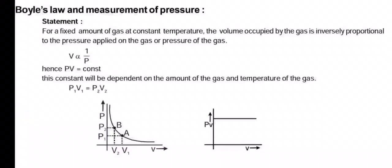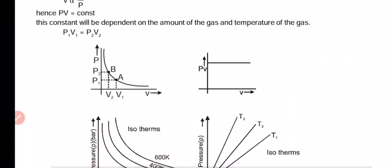This means volume is inversely proportional to the pressure. Hence we can say PV equals to constant. This constant will be dependent on the amount of the gas and temperature of the gas. So we can say P₁V₁ equals to P₂V₂.